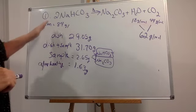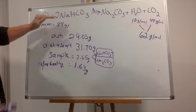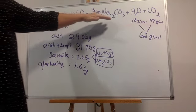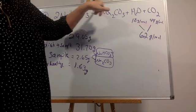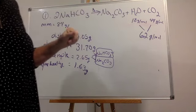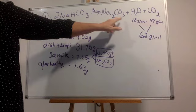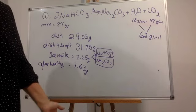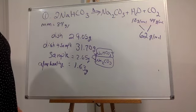The first question was to write the balanced equation. So I went ahead and wrote the balanced equation: two sodium bicarbonate, when heated, yields sodium carbonate, water, and carbon dioxide. I included the molar mass under each one because I know I'm going to be crossing the mole bridge, so I just take care of the molar mass all at once.